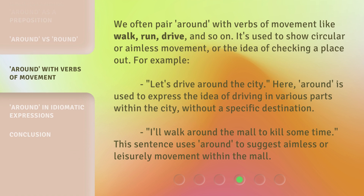We often pair 'around' with verbs of movement like walk, run, drive, and so on. It's used to show circular or aimless movement, or the idea of checking a place out. For example, 'let's drive around the city' — here, 'around' expresses driving in various parts of the city without a specific destination. 'I'll walk around the mall to kill some time' uses 'around' to suggest aimless or leisurely movement within the mall.